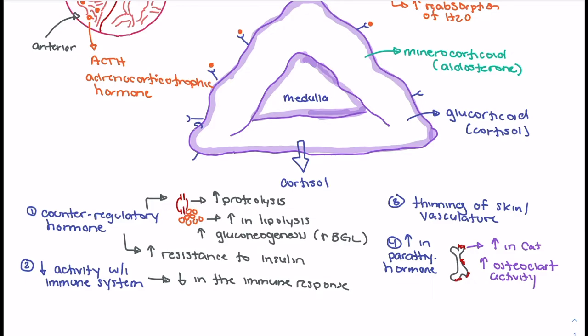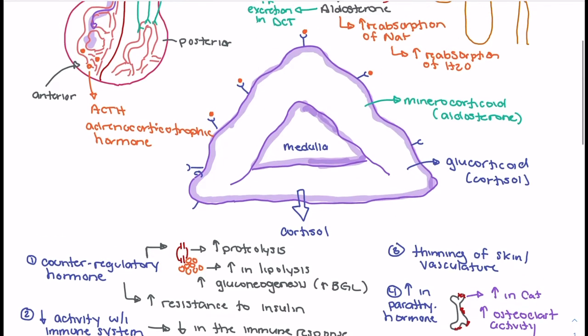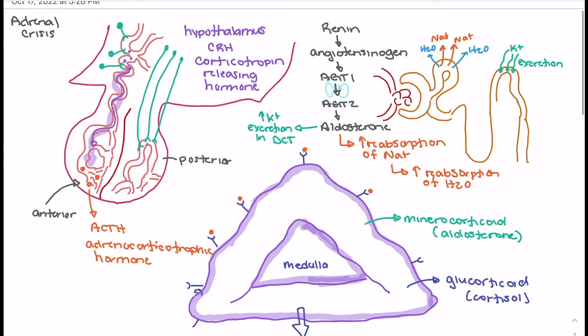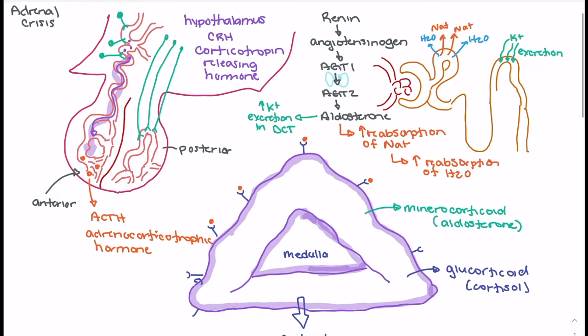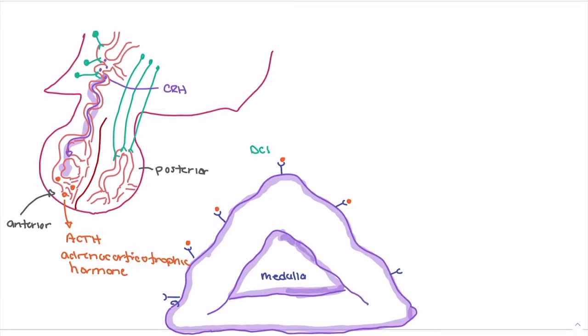As we can see, aldosterone and cortisol play important roles in homeostasis. It's essential that we have a properly functioning system where CRH is released to allow ACTH to be released, stimulating mineralocorticoids and glucocorticoids. When talking about adrenal crisis, we're talking about what happens when someone has too little of these hormones — the adrenal corticoids and mineralocorticoids — and what the consequences are.